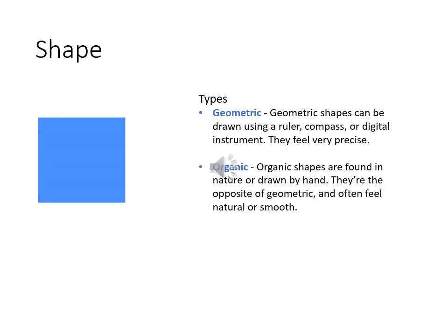The next element of design is shape. When we join lines together to create a bound figure, it is called a shape. Shapes are what we use when doing a 2D composition. There are two types of shapes: geometric shapes and organic shapes.